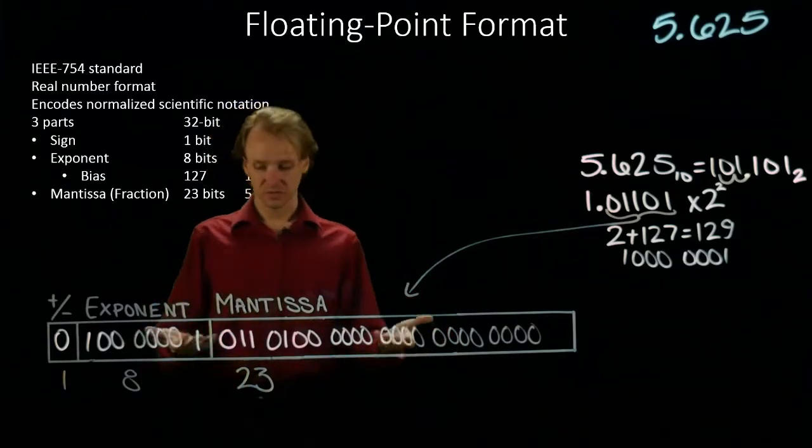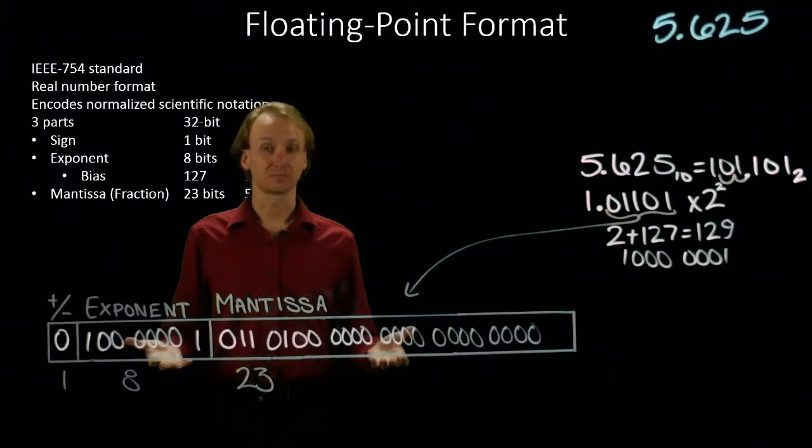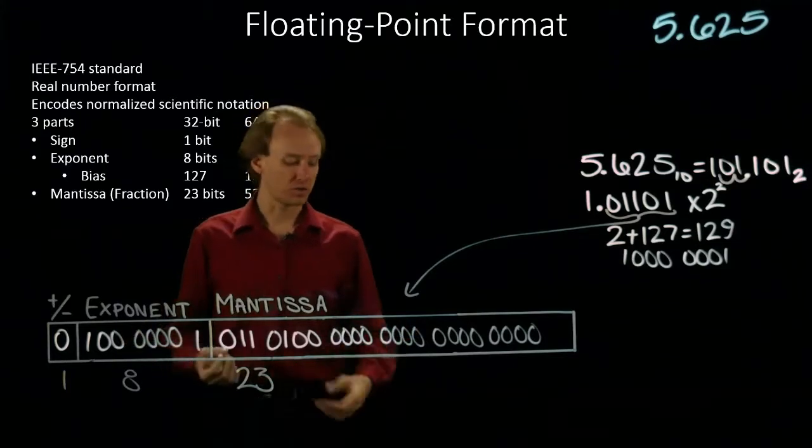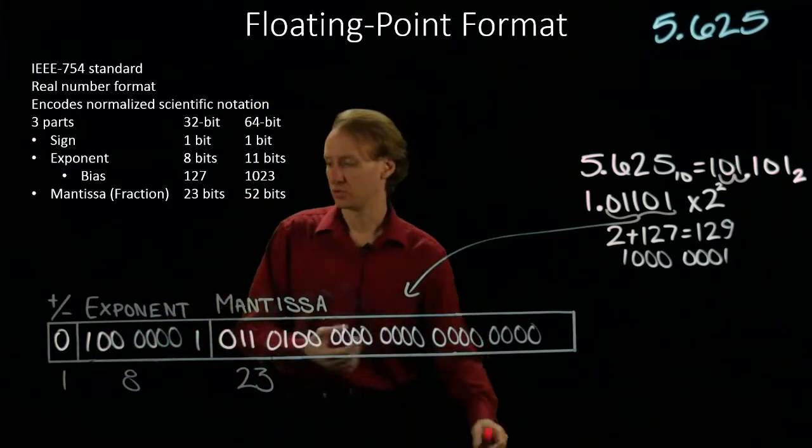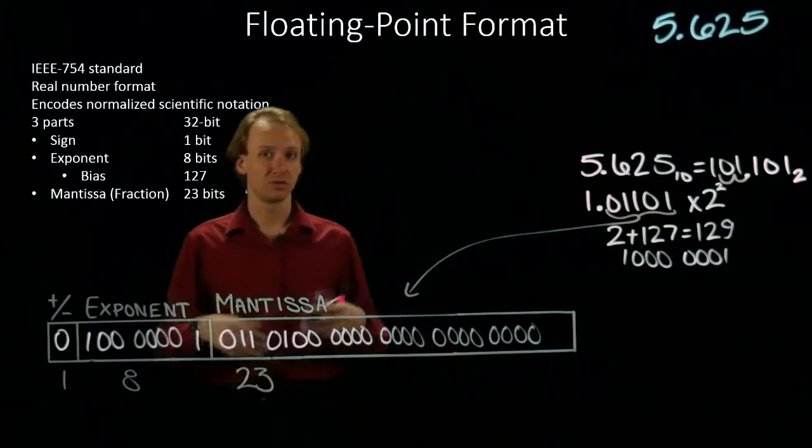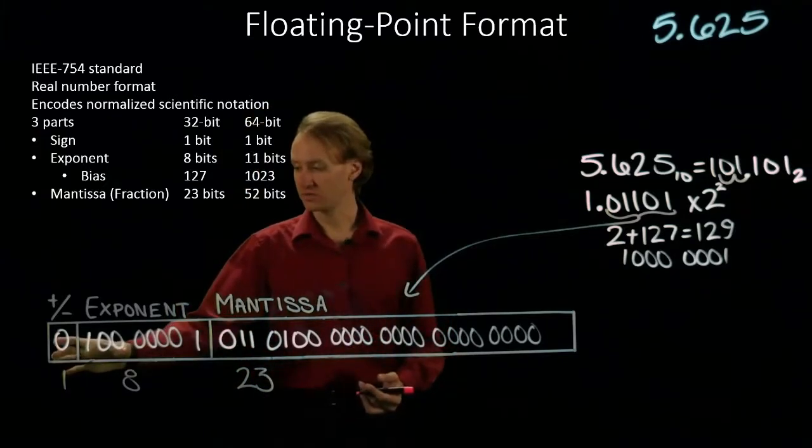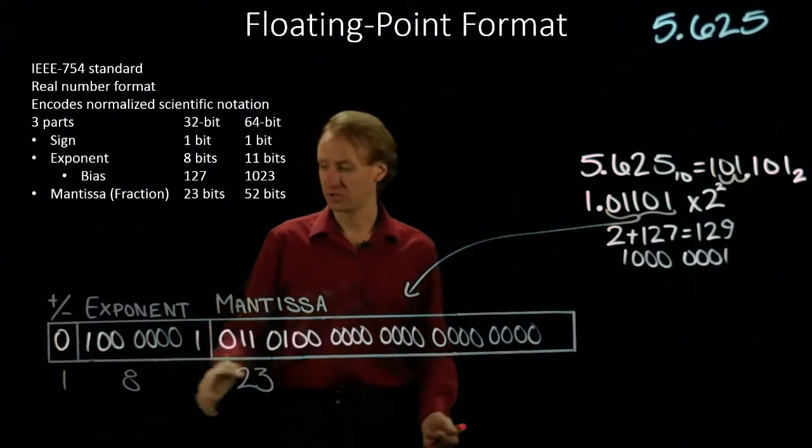And there is 5.625 in the floating point format. Now I might want to also convert this to a hexadecimal representation because that might make it easier to read, to talk about. In which case, I'm going to look for blocks of 4 and just kind of read those off.